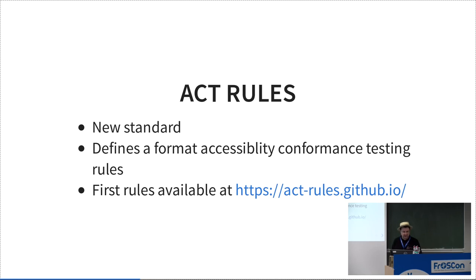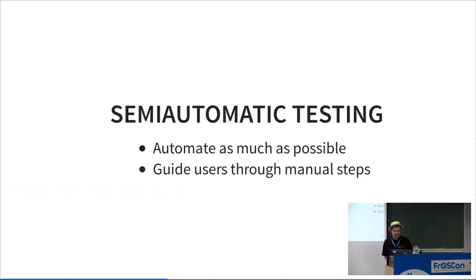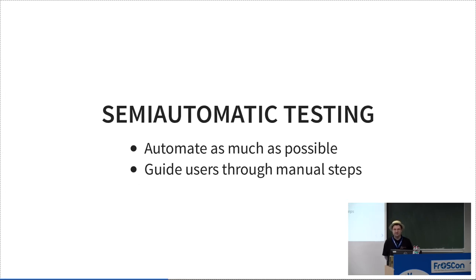The intent is to provide tool implementers a guideline for these things, but at the moment there are not many tools which implement that. The idea I had is: you should automate as much as possible when testing, and for the steps which require manual work, you should guide users through those steps so they know exactly what to check for.